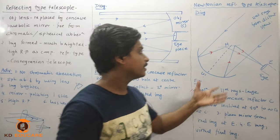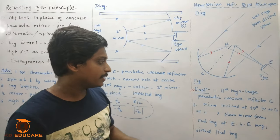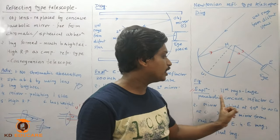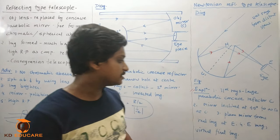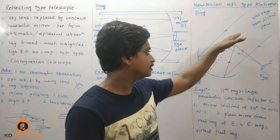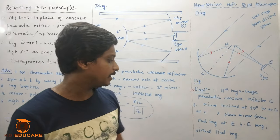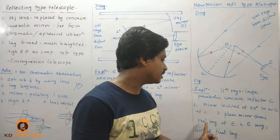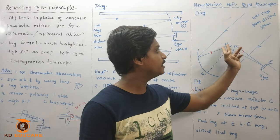Parallel rays come from the distant object. We are using a large parabolic concave reflector, which we represent as C. The mirror is inclined at an angle of 45 degrees to the axis at C. The plane mirror forms a real image at E.